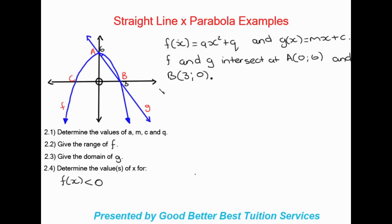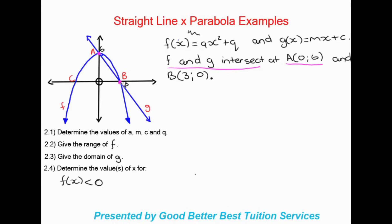Here we have a Cartesian plane with a straight line graph and a parabola. f(x) = ax² + q is our parabola equation and g(x) = mx + c is the straight line graph. f and g intersect at point A which is (0, 6), and they also intersect at point B which is (3, 0).